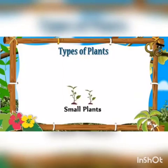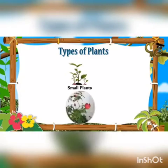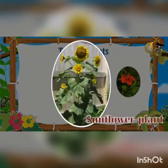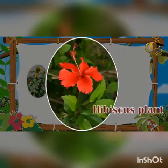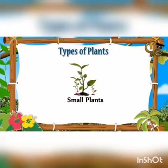Some plants are small but strong. Such plants are called shrubs. For examples, rose plant, sunflower plant, and hibiscus plant.